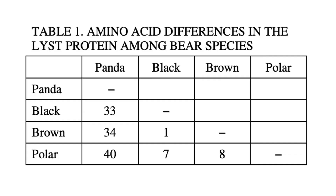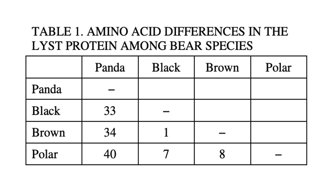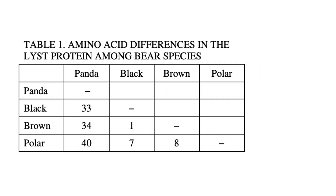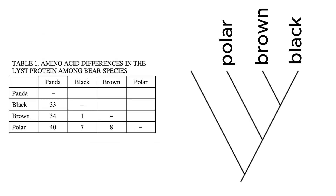Looking at the matrix of species, bigger numbers mean more distant and smaller numbers mean closer. This is an actual example from the 2018 AP Biology FRQ, using amino acid sequence data between various species of bears. We can clearly see that black and brown bears, with just one amino acid difference, would be the most closely related. Then polar bears and black and brown bears share about seven or eight differences, putting them closer to the black-brown bear clade than the panda bear. Pandas, with their massive difference to the rest of the bears, would take the outgroup spot, allowing us to complete our cladogram.